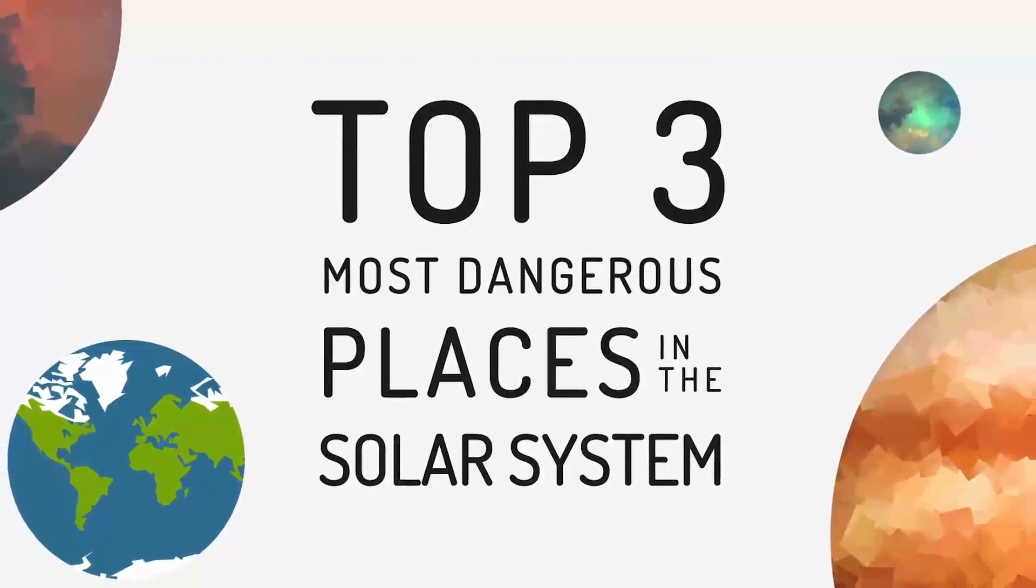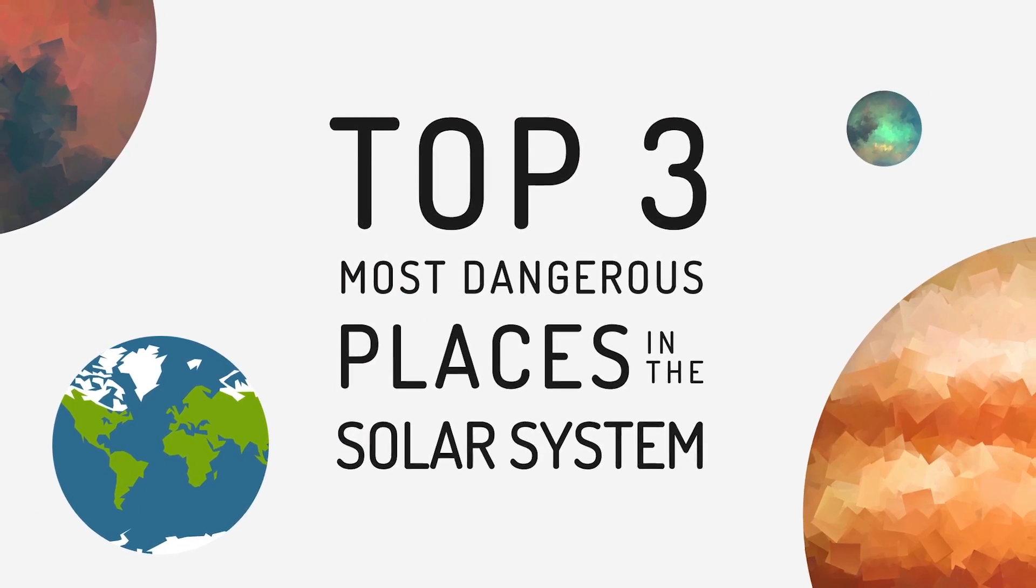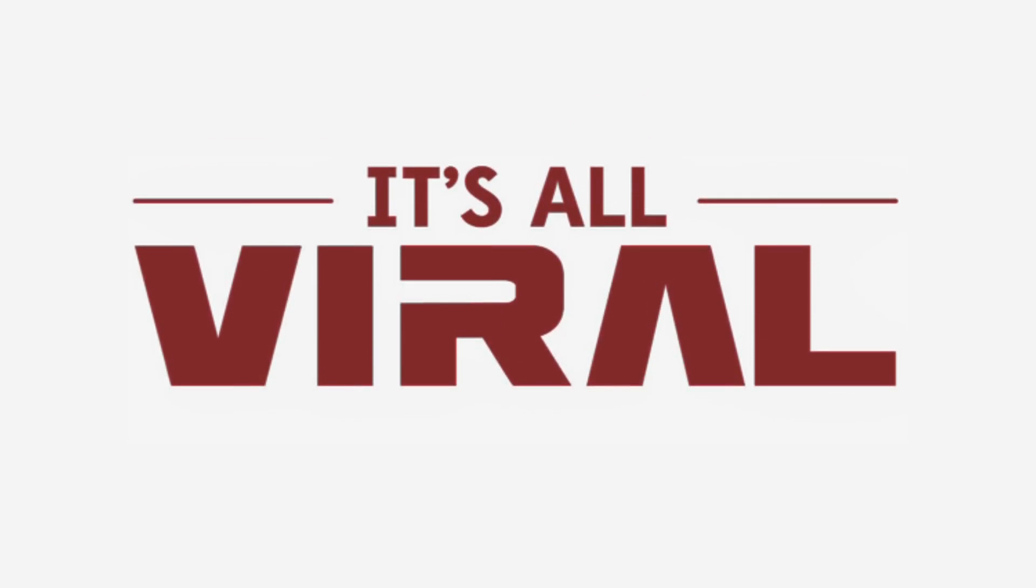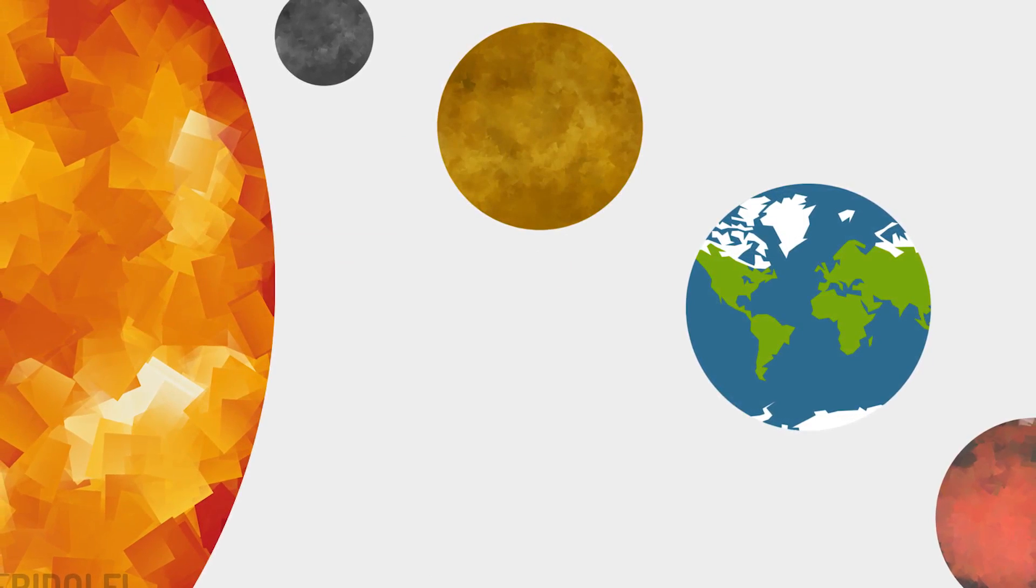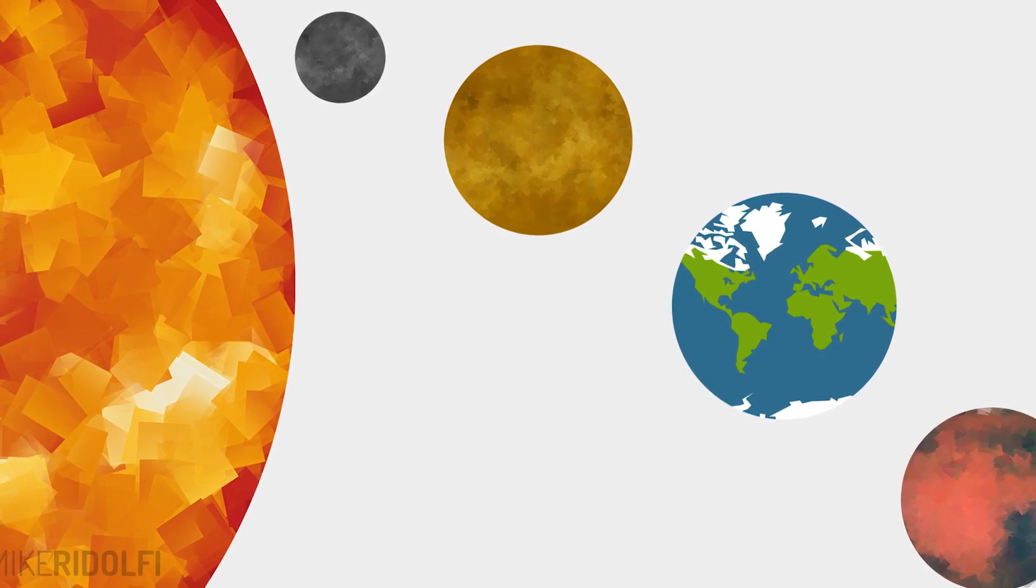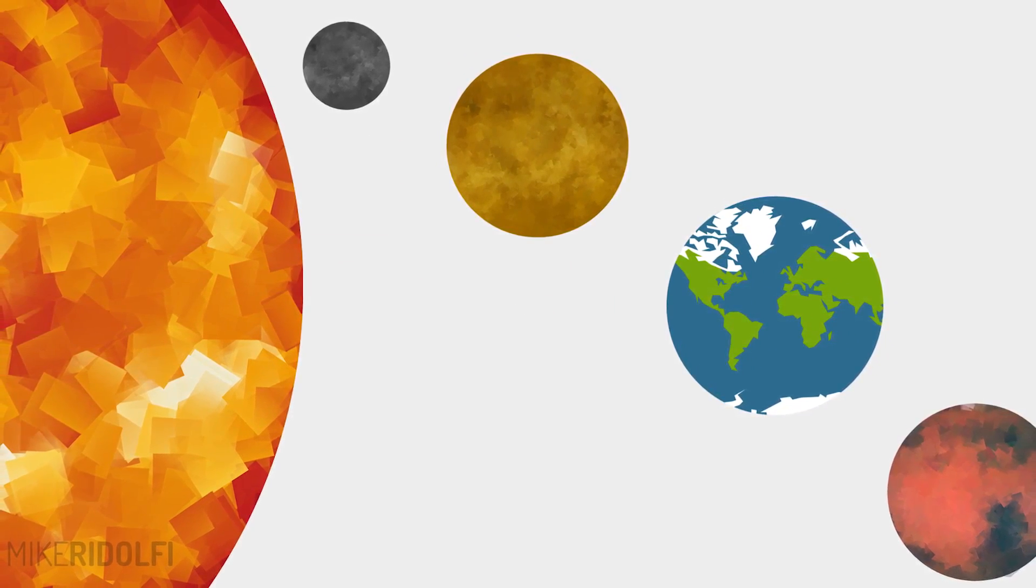Anyways guys, those were three of the most dangerous places in the solar system. This has been Mike for It's All Viral. Subscribe to this channel for more great content and leave a comment down below letting us know where is the one place in the solar system you would love to visit. Thanks for watching.